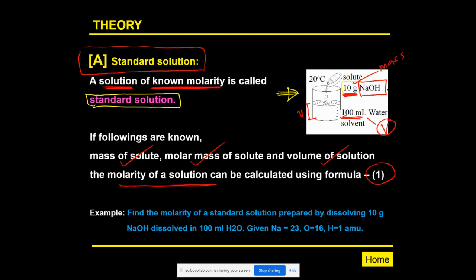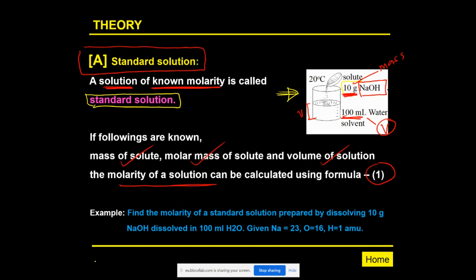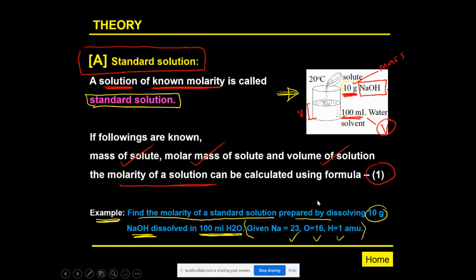The example question asks: find the molarity of the standard solution prepared by dissolving 10 grams of sodium hydroxide into 100 mL of water. Given atomic weights: Na = 23, O = 16, H = 1.